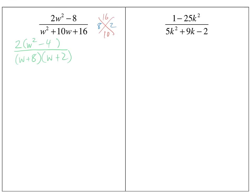The top is not done yet. One way you know the top's not done is because usually when you simplify, something's going to cross out, and nothing is becoming a 1 yet. So the top might still factor. What you should notice is that's a difference of squares on the top — W squared minus 2 squared, which is W and 2. So we can factor it further. I still have the 2 out front.